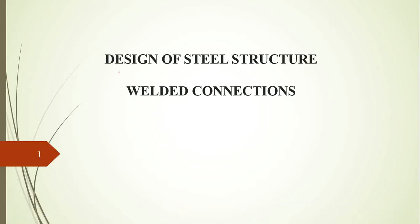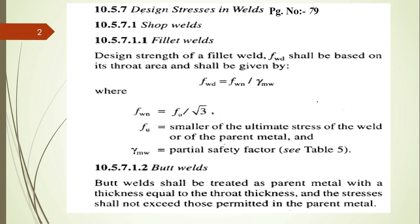Hello everyone, welcome to the 7th online session of Design of Steel Structure. In this session we are going to solve some more problems regarding the welded connection. To calculate the strength, it is the area of the weld into the value of the stresses. FWD equals FWN divided by gamma W. For shop weld, gamma MW is 1.25; for field weld it should be taken as 1.5.